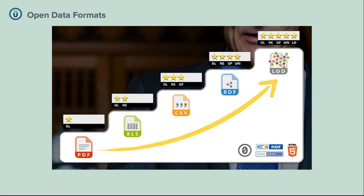The three-star format is based on a scale where, as you go up, the data becomes more reusable. A one-star is a PDF or map image — it makes data available but it's very difficult to reuse. The next step is an Excel spreadsheet or proprietary software publication that most people can reuse but not everyone. CSV or open document formats become the third step. Four and five star put the data in the internet rather than being files on the internet.